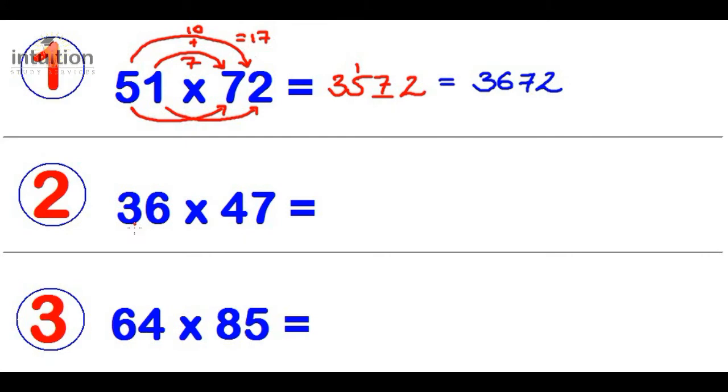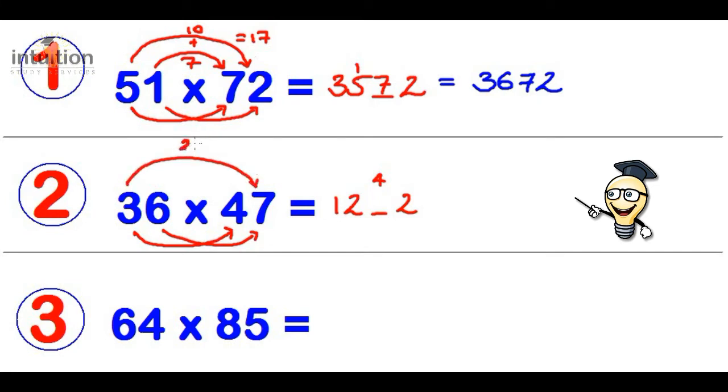Number 2. So we do 3 times 4, which is 12. Leave a gap. Then 6 times 7, which is 42. So carry the 4. Then we do 3 times 7, which is 21, and we add that to 6 times 4, which is 24. That gives 45. Adding this 4, it's 49. So the final answer is 1692.